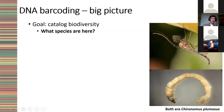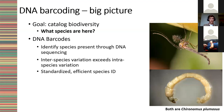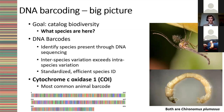Even though some species look very different at different life stages or look very similar to one another, we can use DNA barcodes to identify them in a quantitative fashion. This is done using small sections of DNA present in all organisms of interest. These barcodes have interspecies variation that exceeds intraspecies variation, giving a good taxonomic signature where we can get a DNA sequence and say with confidence what species is present. For animals, we most commonly use the DNA barcode cytochrome c oxidase 1, also known as CO1.